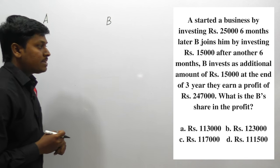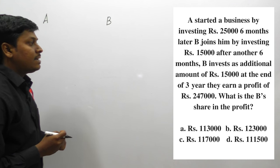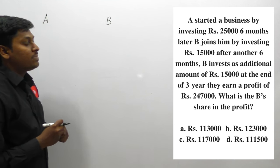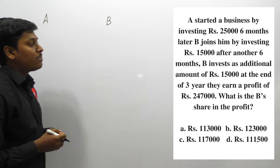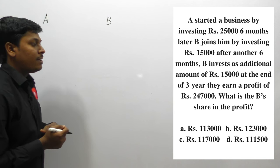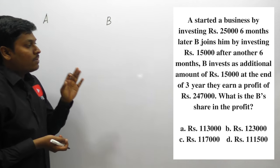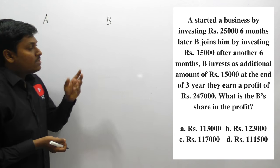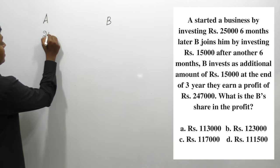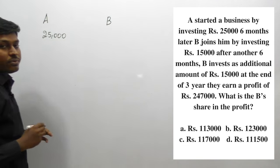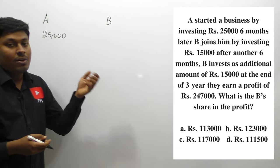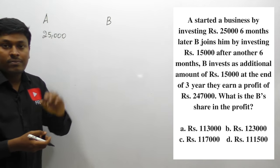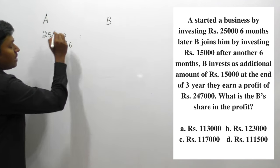Question number 3: A started a business by investing rupees 25,000. Six months later, B joined with an investment of rupees 15,000. After another 6 months, B invested an additional rupees 15,000. At the end of 3 years, they earned a profit of rupees 2,47,000. What will be B's share in the profit?